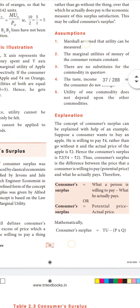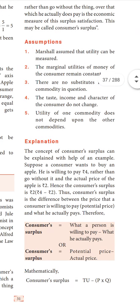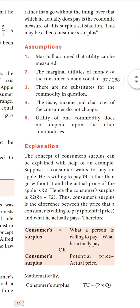Coming to assumptions. Assumptions are the conditions needed for the law to work. First, Marshall assumes that utility can be measured — utility is measured in terms of money. Second, the marginal utility of money for the consumer remains constant; you will not go purchasing more because of a change in income.